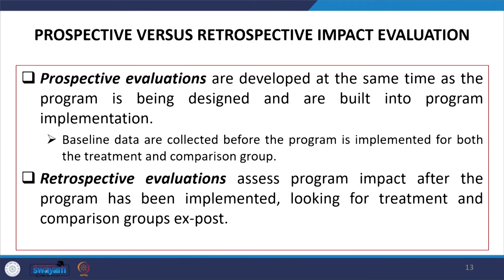There is an important difference between prospective and retrospective impact evaluation. Prospective evaluations are developed at the same time as the program is being designed and are built into program implementation. Baseline data are collected before the program is implemented for both the treatment and comparison groups — that is why those are called baseline surveys. Retrospective evaluations assess program impact after the program has been implemented, retrospectively examining whether it had impacted the group or not.